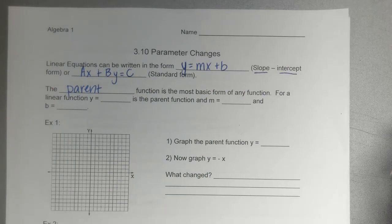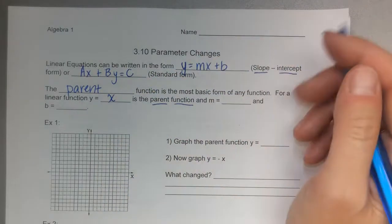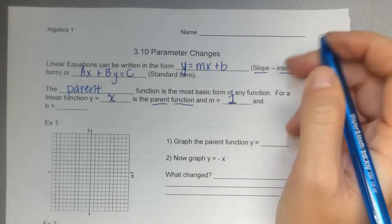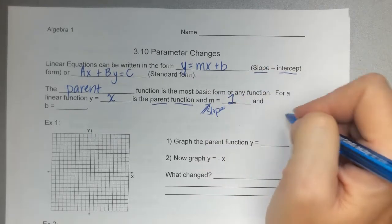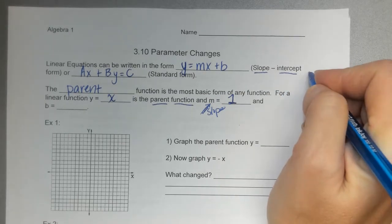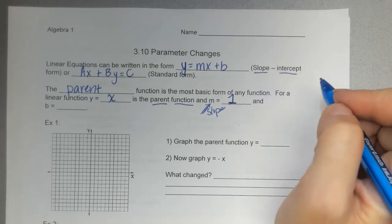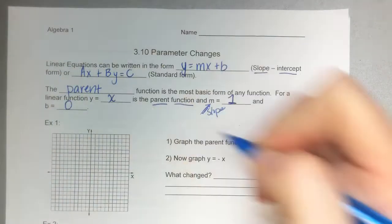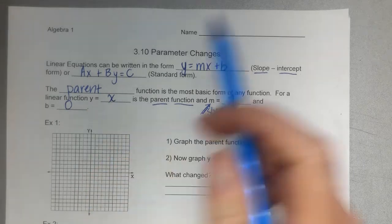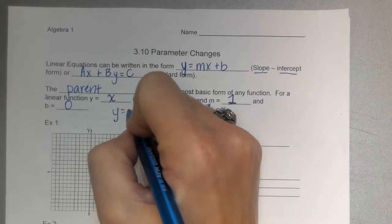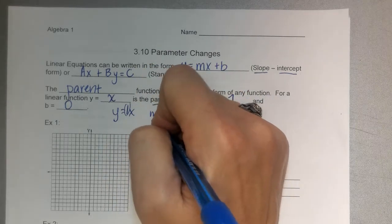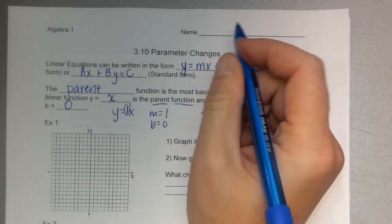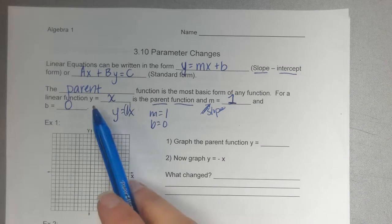For a linear function, y equals x is the parent function — that's the most basic function. You have to have an x in there, and m equals 1. On the most basic function, your slope is going to be 1. So it rises 1 and runs 1. That's the most basic line of slope. And your b would equal 0. So y equals x: your slope is 1 because it's like you have a 1 in front of the x, and your b is 0 — there's no plus anything. That's your most basic, or parent, function.